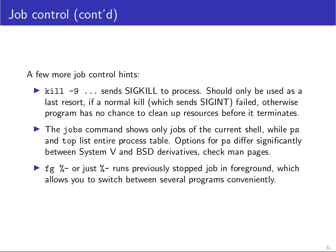'kill -9' sends the SIGKILL signal to a process. This is usually recommended only as a last resort. First you try to kill a process normally and give it a couple of seconds. If it really doesn't want to die — for example because it's hanging on some resource the kernel can't release, or because it tried to intercept the signal but misbehaved while doing so — then you can forcefully terminate it with 'kill -9'.